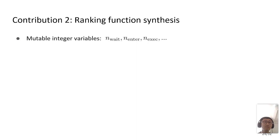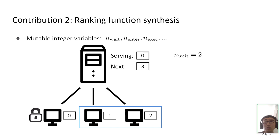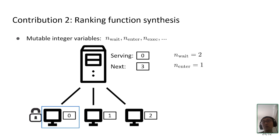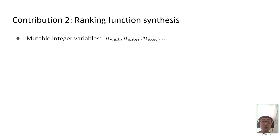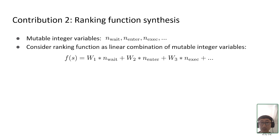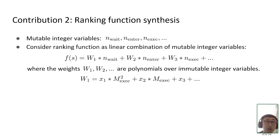Let's consider what variables can appear in the ranking function using the ticket lock example. We may have an integer variable counting the number of clients waiting for the lock, a variable counting the number of clients that have entered the critical section, and another variable counting the number of executions within the current critical section. We consider the ranking function as a linear combination of these variables, where the weights are themselves polynomials over immutable integer variables — for example, mExec denotes the maximum number of executions a client can take while holding the critical section. Most practical distributed protocols can have ranking functions naturally expressed in this linear polynomial form.